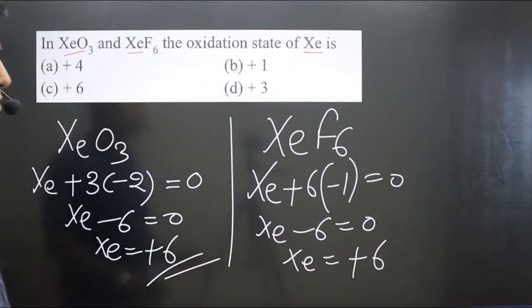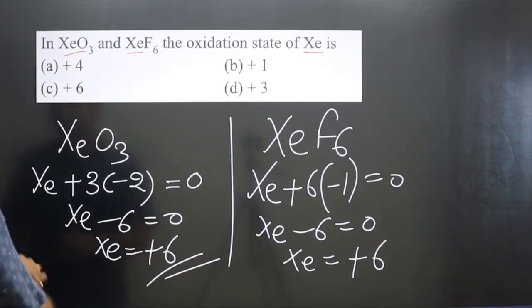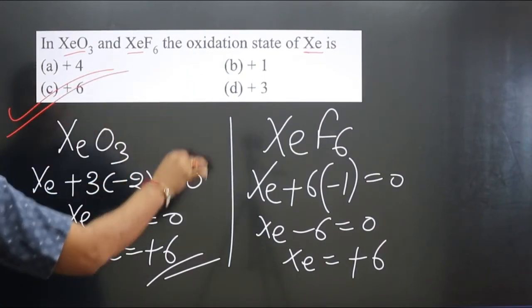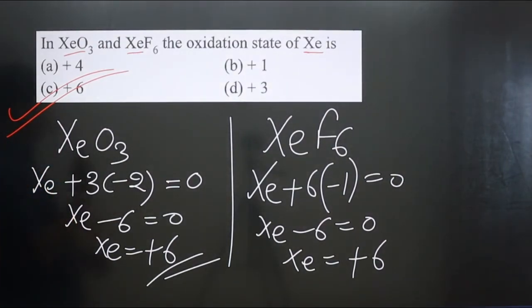You can see in both the compounds, xenon is present only in plus six oxidation number. Option C is correct.